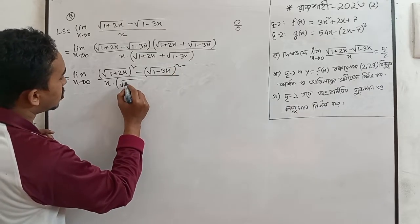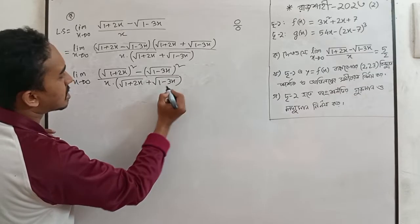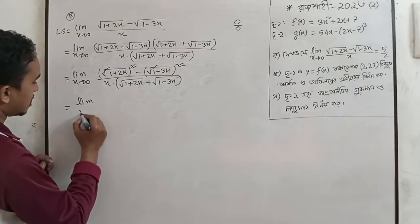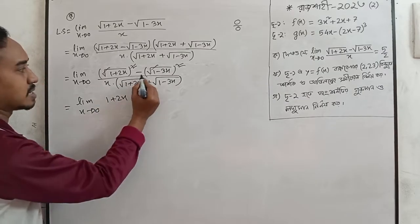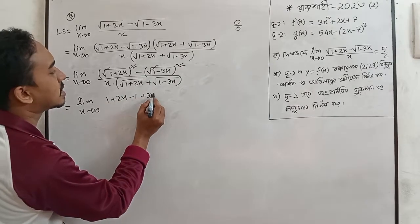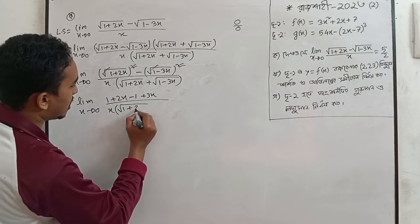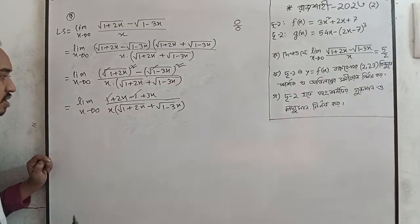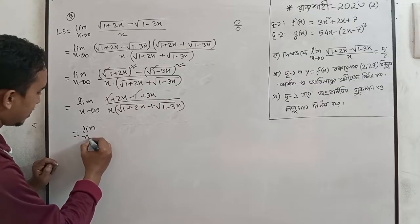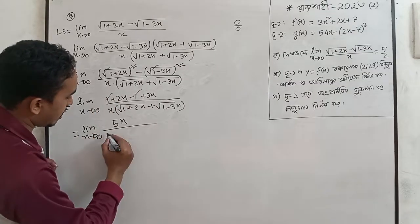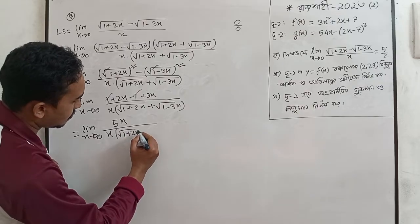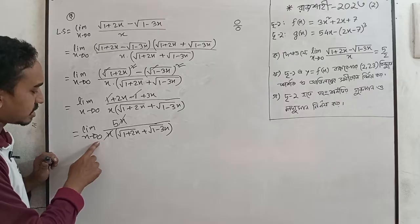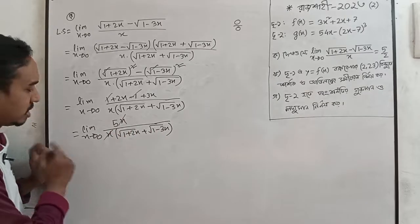So we divide x into root of 1 plus 2x plus root of 1 minus 3x. We can use this: the square roots cancel out. The limit x tends to 0: on the top, 1 plus 2x minus 1 plus 3x equals 5x, divided by x times root over 1 plus 2x plus root over 1 minus 3x.